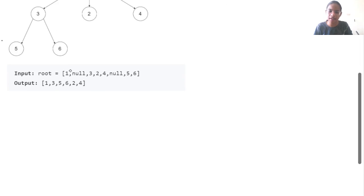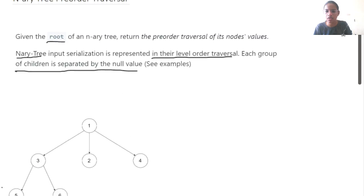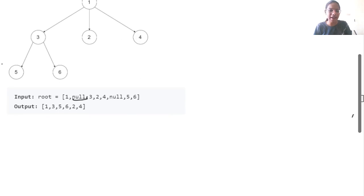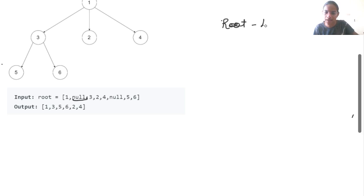Each group is separated in the input by a null value. So this is the first level, then 3, 2, 4 is the second level and 5, 6 is the third level. Now what do we need to return? We need to return the pre-order traversal of the N-ary tree. If you remember about binary trees, in binary tree pre-order traversal, first we took the root, then the left value, and then the right value.